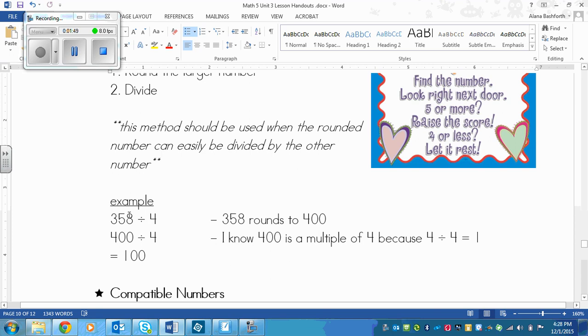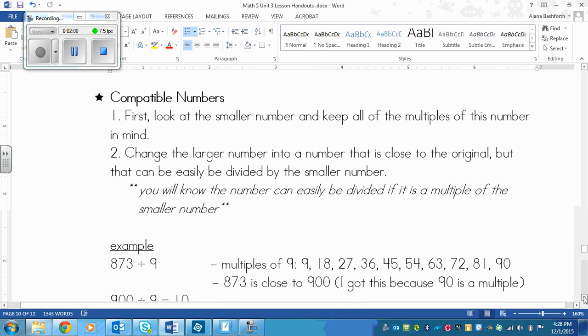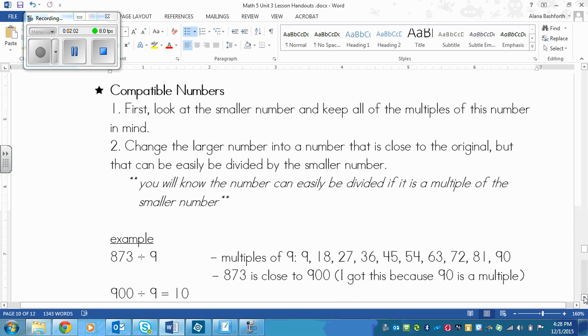That's an example of using rounding. This one would be the less accurate and sometimes more difficult method. I tend to use compatible numbers more often when I am estimating quotients. Here are the steps: First, look at the smaller number and keep all of the multiples of this number in mind. Then you need to change the larger number into a number that is close to the original but that can be easily divided by the smaller number.